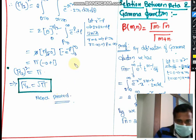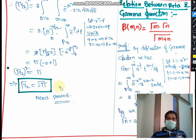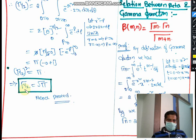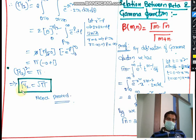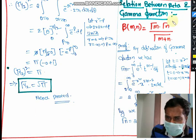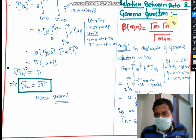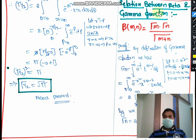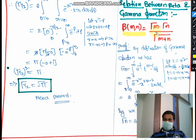This is a very important question for the university exam for five marks. They may ask 'Prove that Γ(1/2) = √π' or 'Evaluate Γ(1/2)' — either way, we prove it using the basic definition of the gamma function. Now we will see one more very important essay question: what is the relation between the beta and gamma functions? The relation is given by β(m, n) = ...